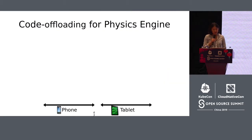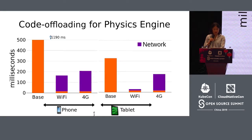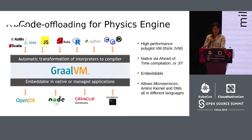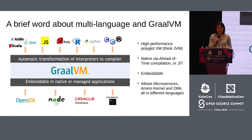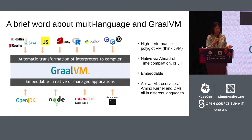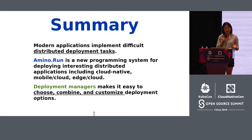The Amino Run system also supports multiple programming languages through the use of GraalVM. This was one of our goals — to be somewhat programming language agnostic. So you can write your Amino Run application and deployment managers in any of the supported languages. That's pretty much it for the guts of the Amino Run system.